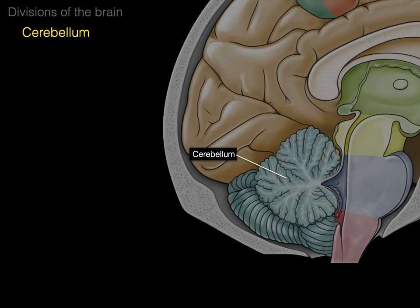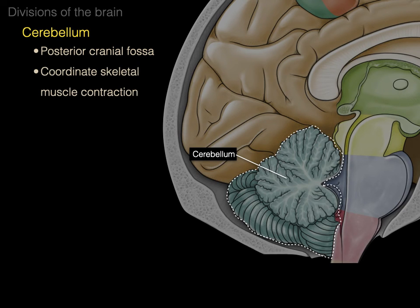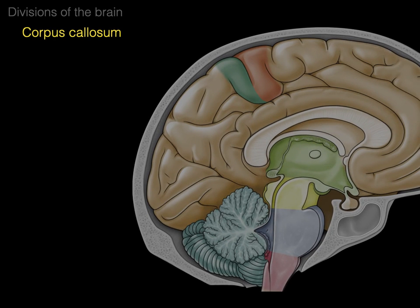Next, the cerebellum — outlined here in the dotted line — is located in the posterior cranial fossa, and its name means 'little brain.' It is separated from the cerebrum by the tentorium cerebelli. The cerebellum coordinates skeletal muscle contraction for smooth movements. There are two cerebellar hemispheres connected by the vermis.